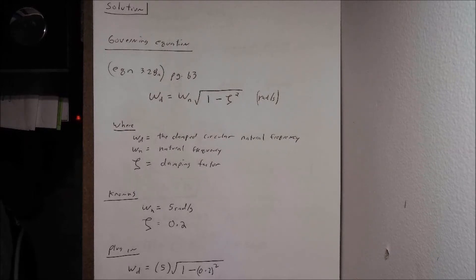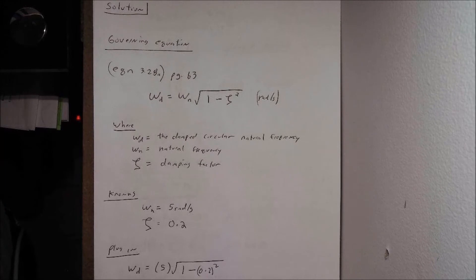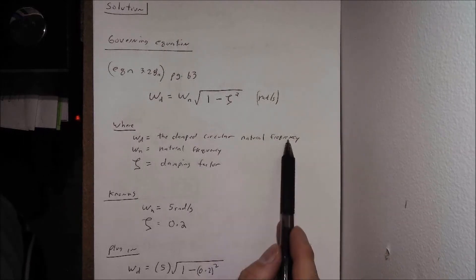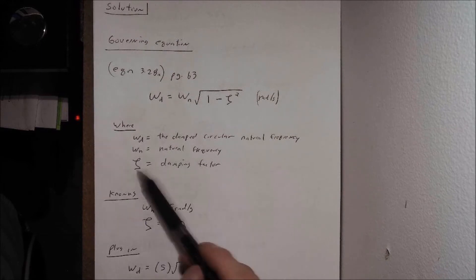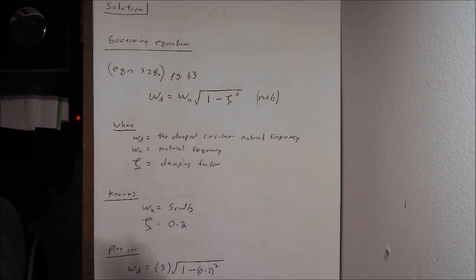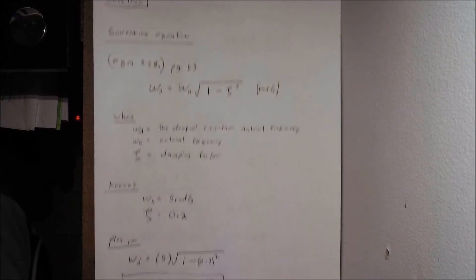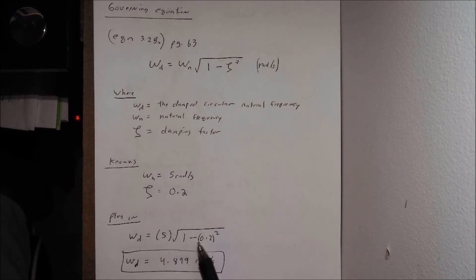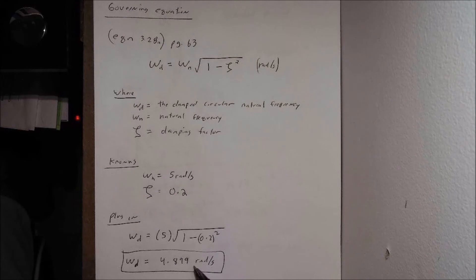Now that we've completed our setup page, we can start our solution. Our governing equation is equation 3.28a on page 63, which tells us that omega sub d equals omega sub n times the square root of 1 minus the damping factor squared, with units of radians per second. Plugging in our known values — damping factor of 0.2 and omega sub n of 5 radians per second — we get omega sub d equals 5 times the square root of 1 minus 0.2 squared, which gives us omega sub d equal to 4.899 radians per second.